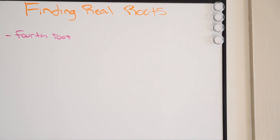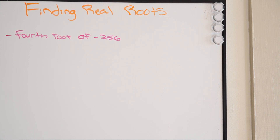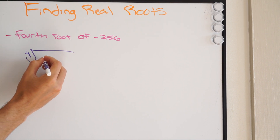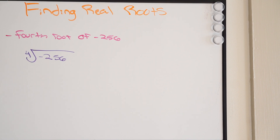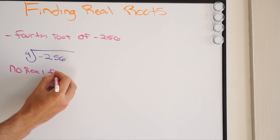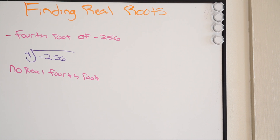Let's try another one: the fourth root of negative 256. Be careful — our root is even, and we're dealing with a negative. We already determined that if your root is even, it's impossible to get a negative result. So again, you would say: no real fourth root. It's mathematically impossible because your root is even, and it's impossible to return a negative in that case.